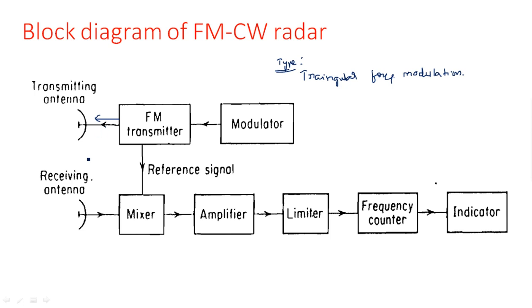By default, FMCW radar uses two different antennas — one for transmission and one for reception — so isolation is provided between them. The transmitter signal goes through one antenna and the received signal comes through another, so there is no connection between them. When a target is present and in motion, the signal is transmitted, reflects off the target, and the reflected signal is collected by the receiving antenna and enters the mixer.